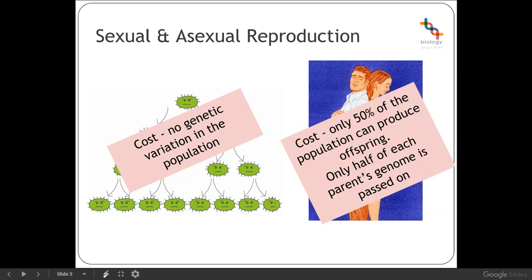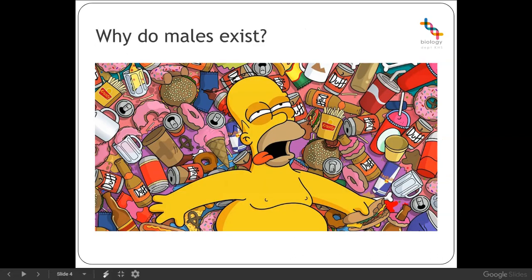With sexual reproduction, there are two particular costs. First of all, only 50% of the population can produce offspring. If we're thinking about evolution favouring organisms that are able to produce a large number of offspring, the fact that only 50% of the population are able to produce offspring is a bit of a deterrent.